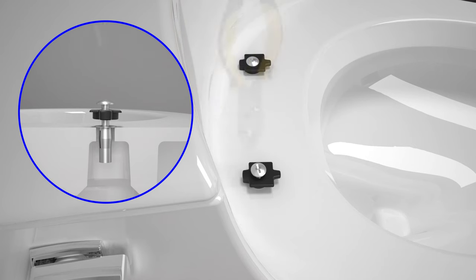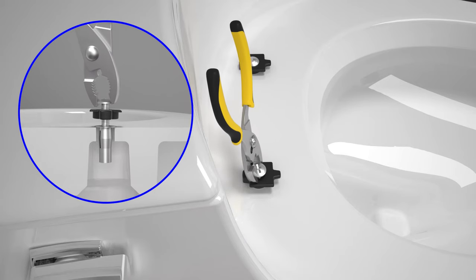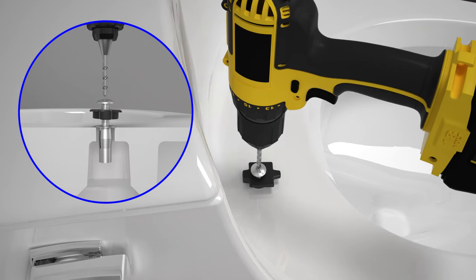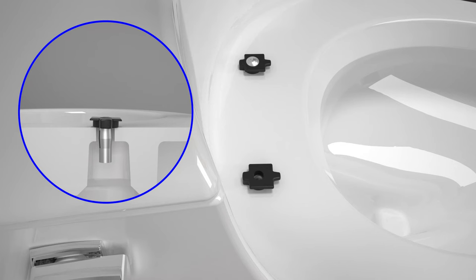If repeated attempts with the stabilizer tool do not work, use pliers to try and pull the bolt and anchor from the toilet. If the bolt is still stuck, use a 5/16 inch drill bit to drill out the old bolt.